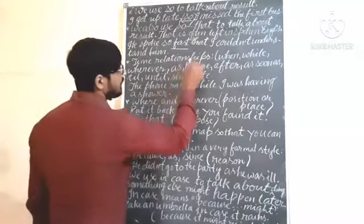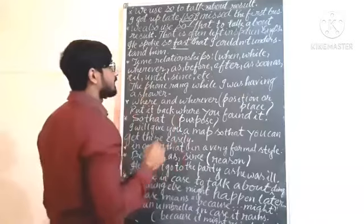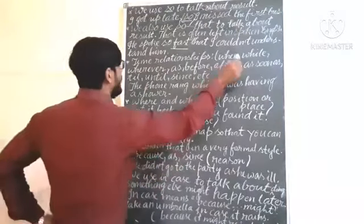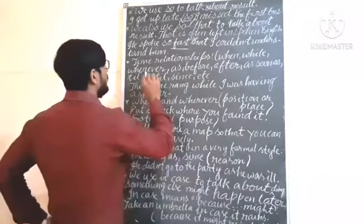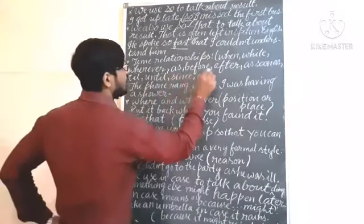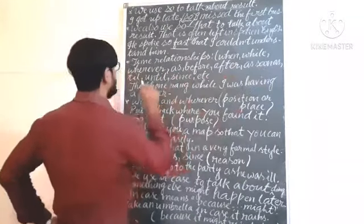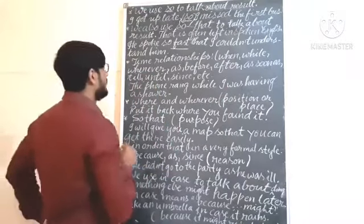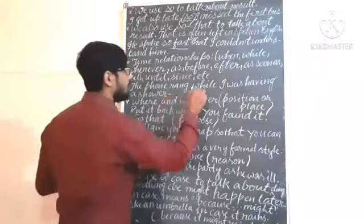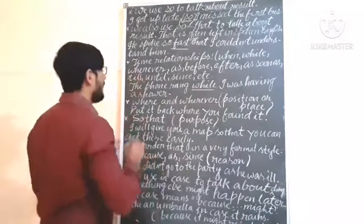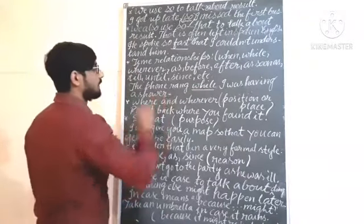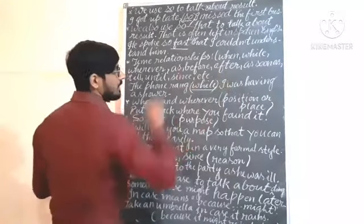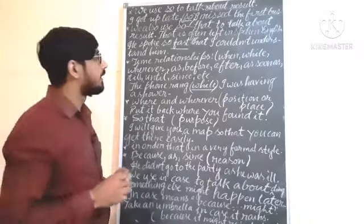Now time relationships. These are the conjunctions used for time relationships: when, while, whenever, as, before, after, as soon as, till, until, since, etc. See the example: 'The phone rang while I was having a shower.' So here we are using 'while'. These are the conjunctions that are used for time relationships.